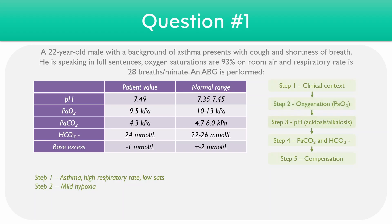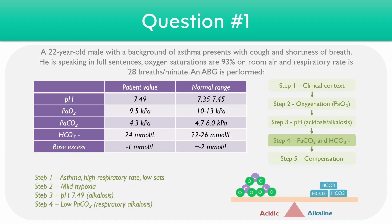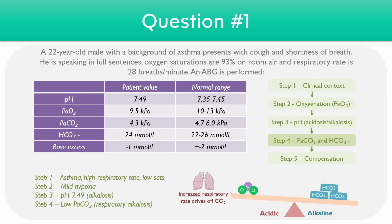Moving on to step three, we can have a look at the pH — in this case it's 7.49, which is slightly alkalotic. We can take a glance at the CO2 and bicarbonate levels to work out what's driving this alkalosis. The PaCO2 is slightly on the lower side, which means it's more likely to be a respiratory alkalosis. We have a diagram illustrating the balance between CO2 and bicarbonate levels in the blood. The patient is breathing incredibly quickly, which drives off more CO2, and as a result the scale shifts towards the alkaline side.